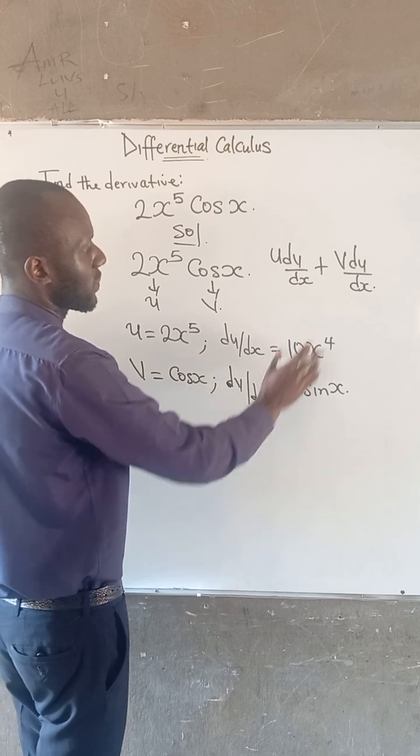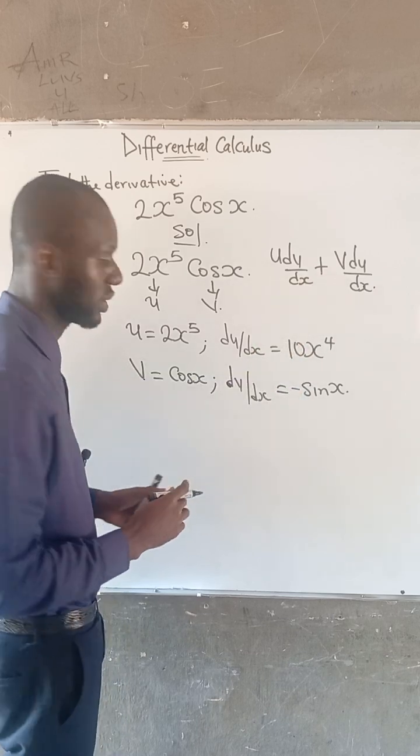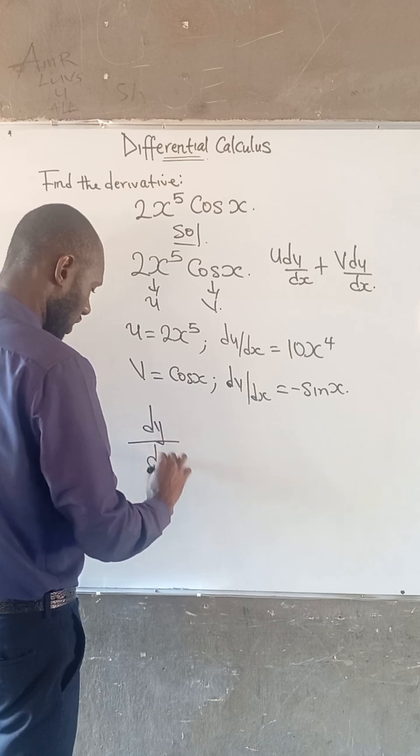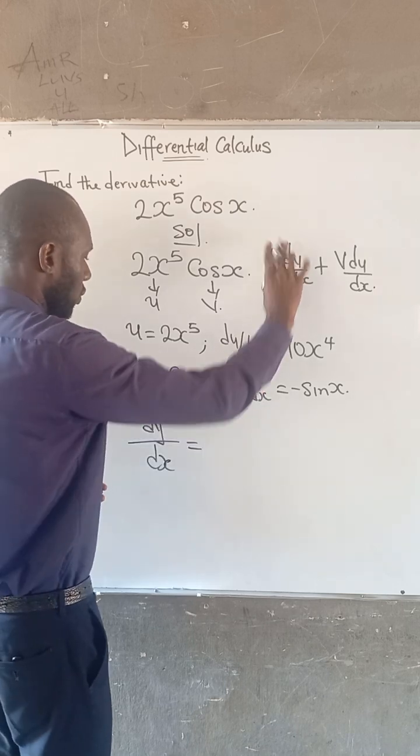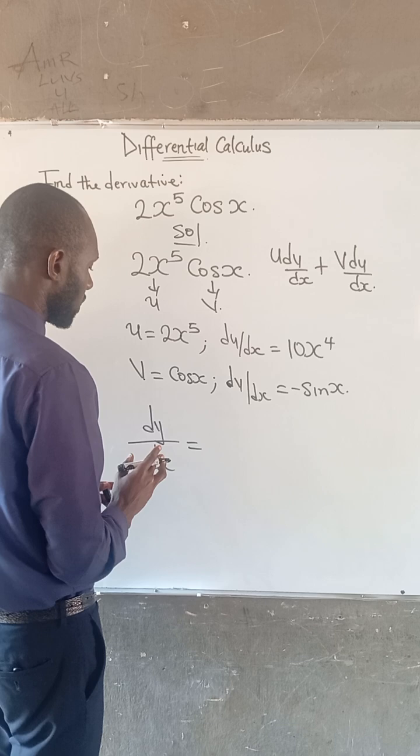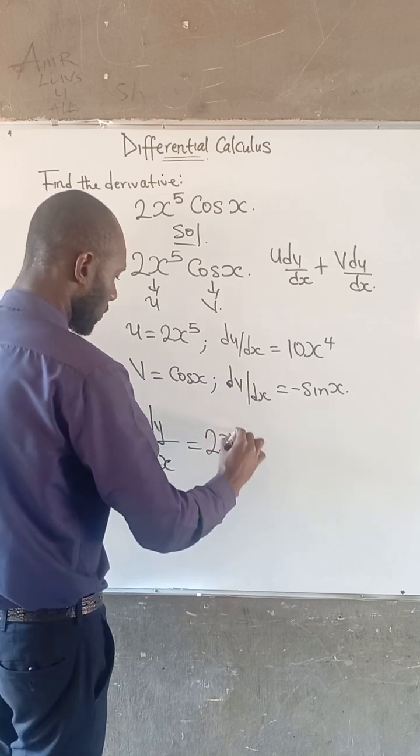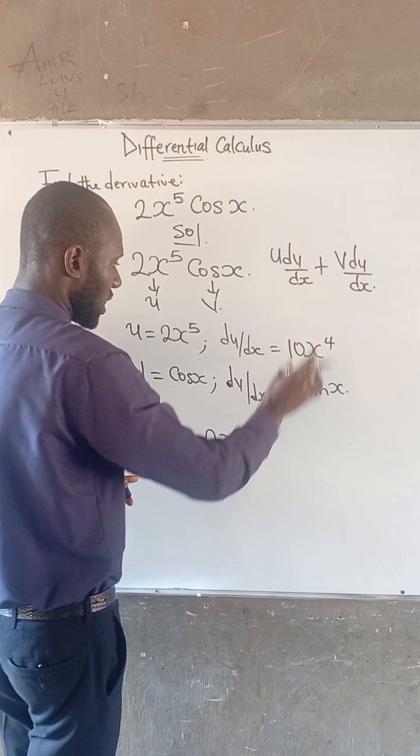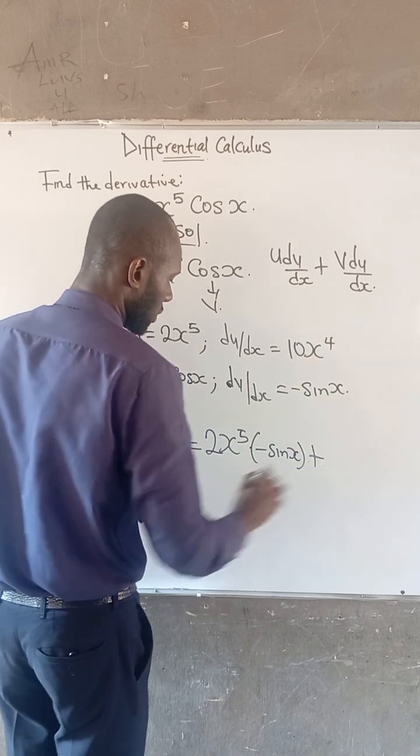Let us substitute these values into the formula. So note that dy/dx is equal to, for u, we have that u is 2x to the power of 5 times, the dv/dx is minus sine x plus,